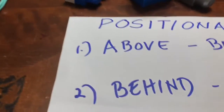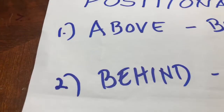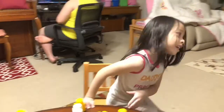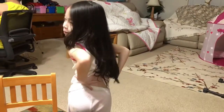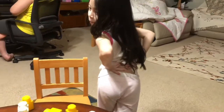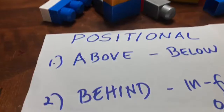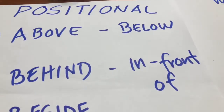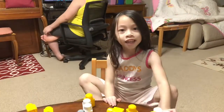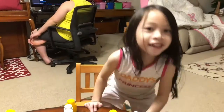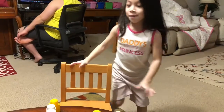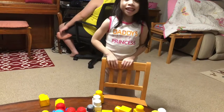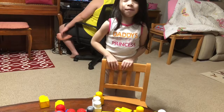Another word is behind. Behind. Can you show me what is behind? Can you stand up? Behind — back, in the back. The other side of behind is in front of. Can you show me what is in front of? In front of. Like the chair is in front of me.